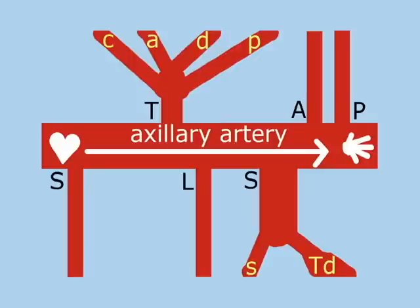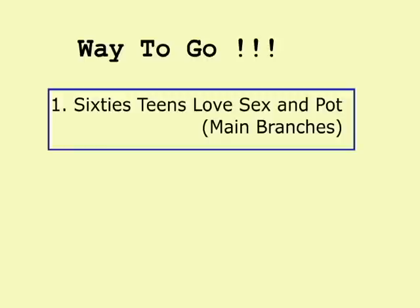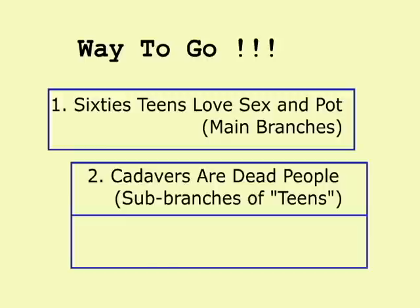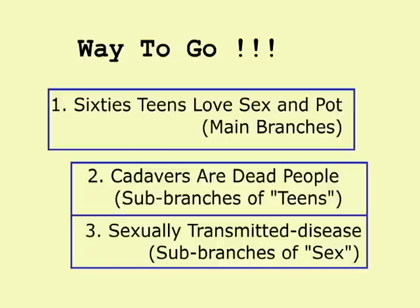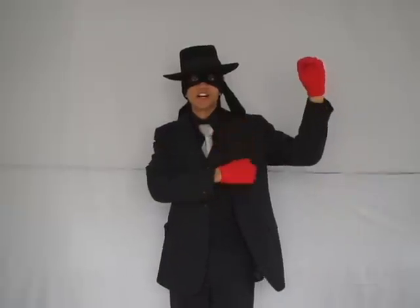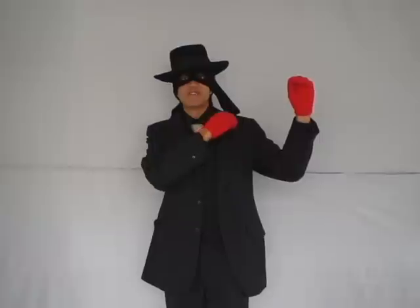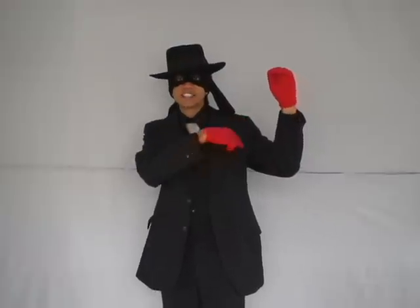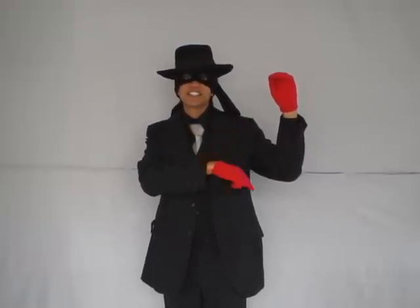You've got a theoretical understanding of the arteries of the shoulder region. To recap: '60s teens love sex and pot' for the six axillary branches. 'Teens grow up and die,' and 'cadavers are dead people' for the thoracoacromial trunk's four sub-branches. And sex — the subscapular trunk — is the big one going down, ending in an STD.